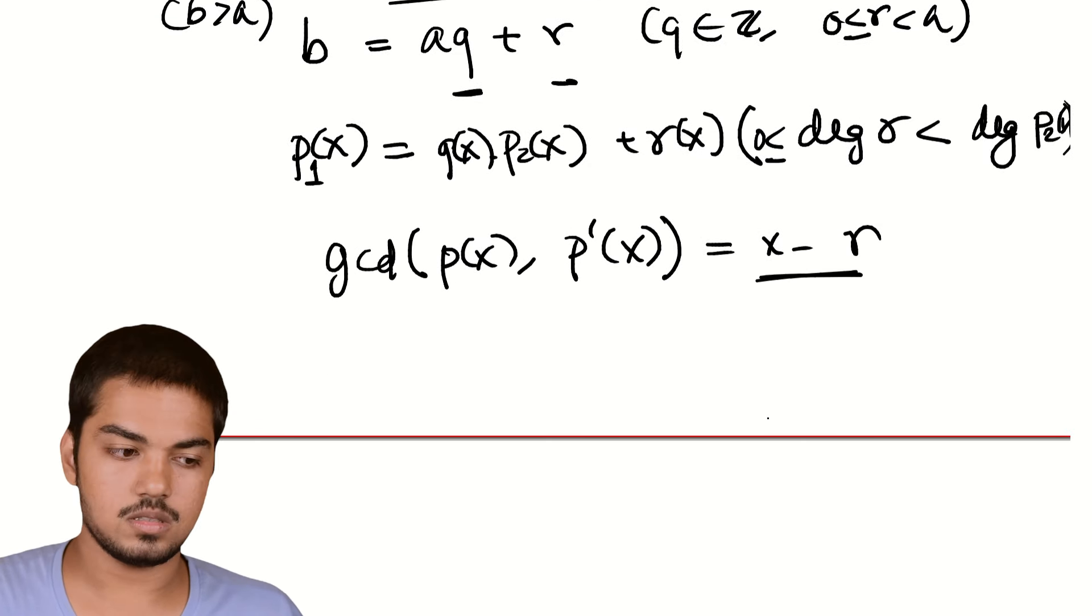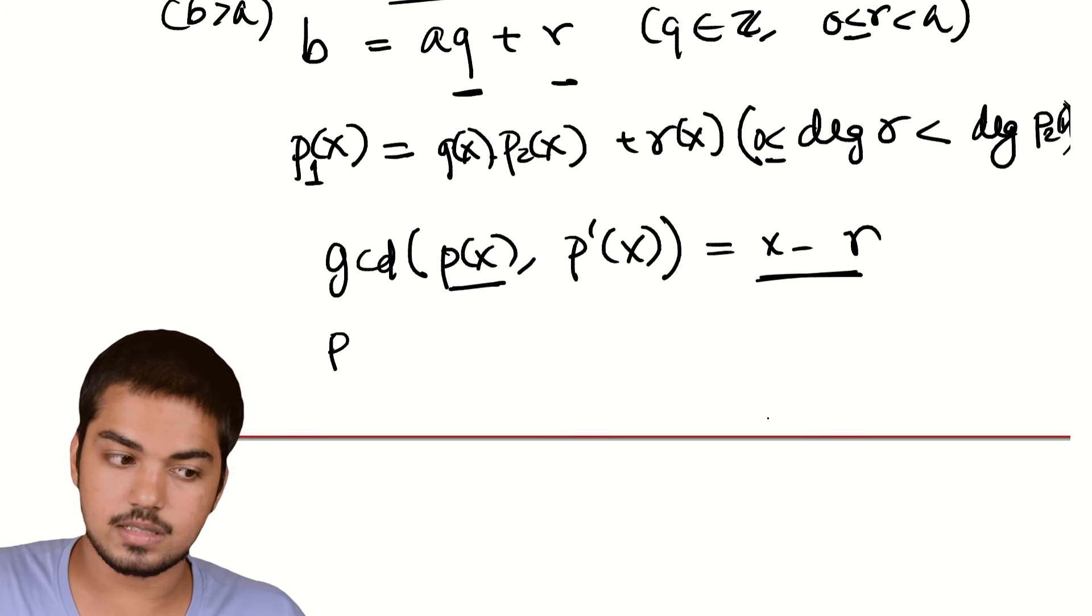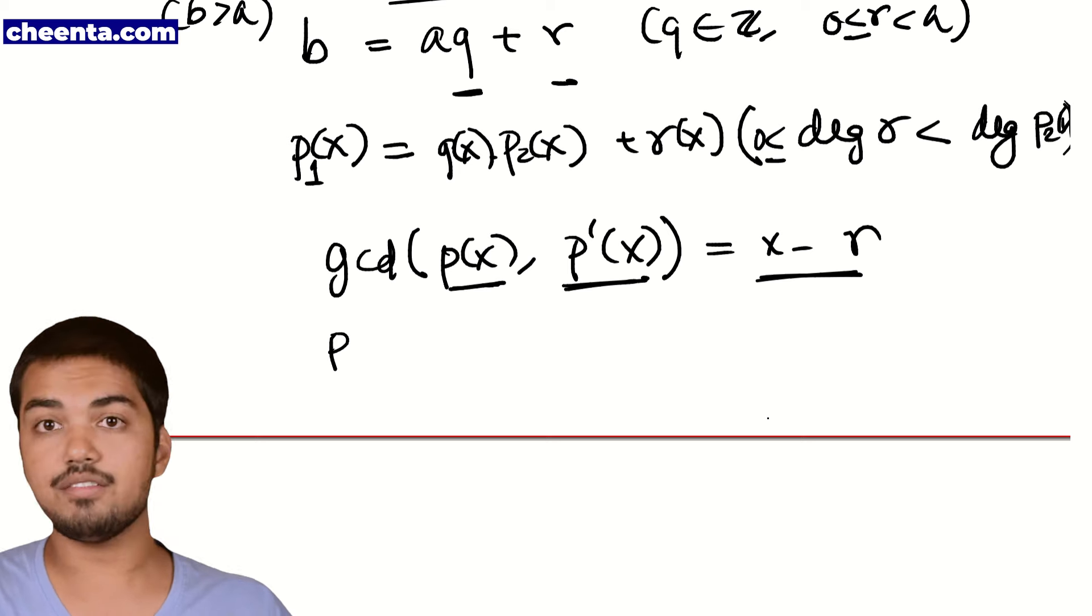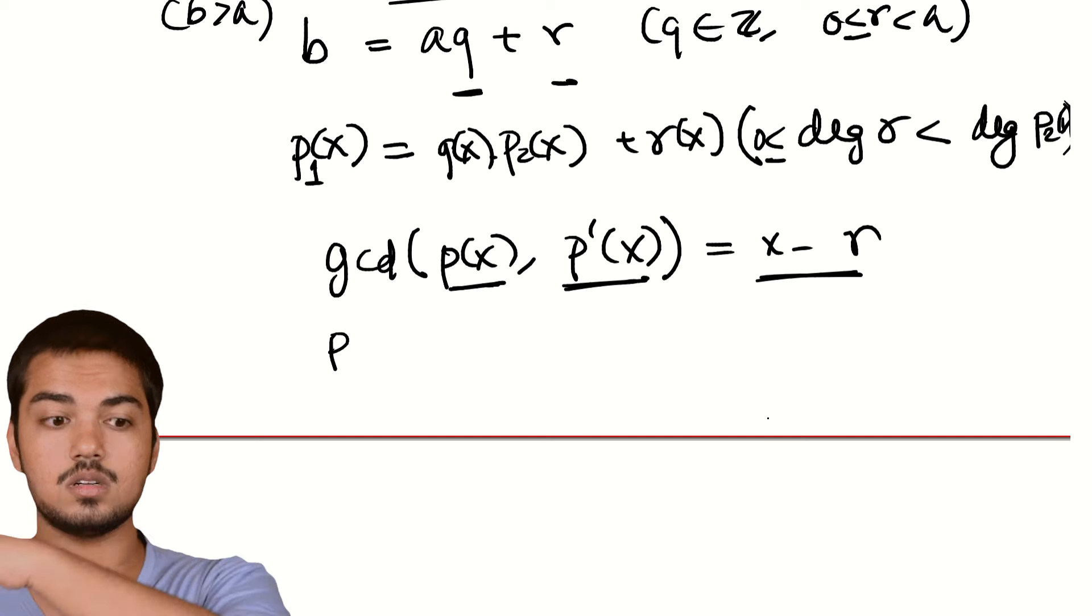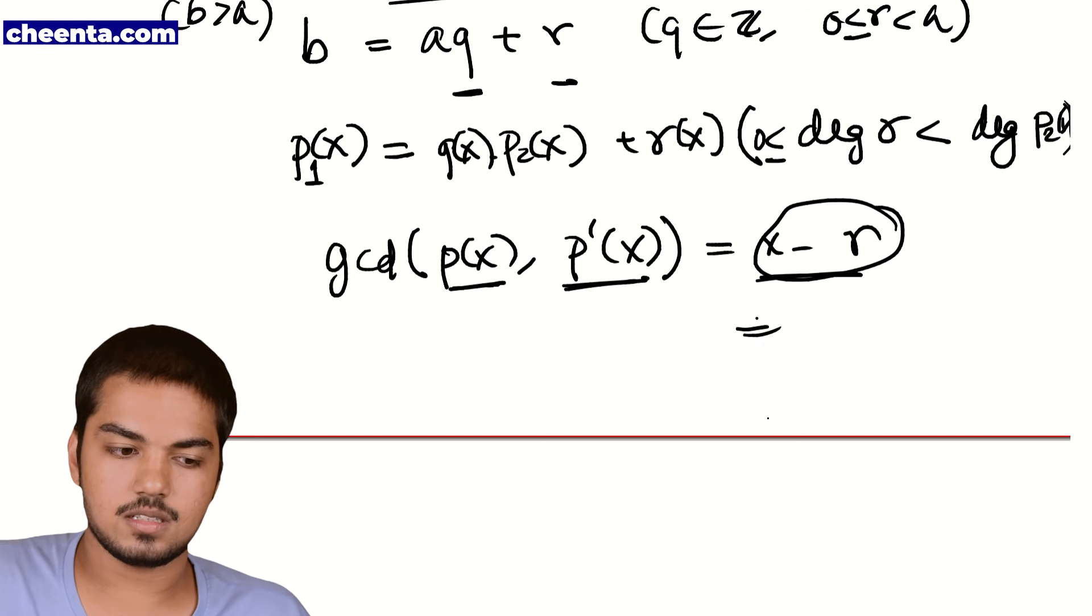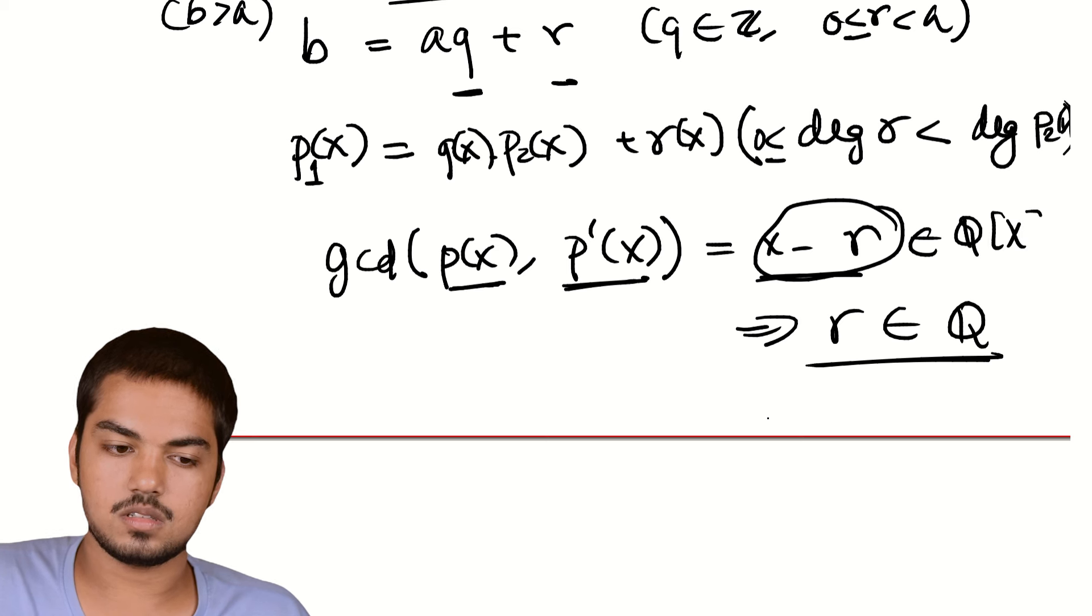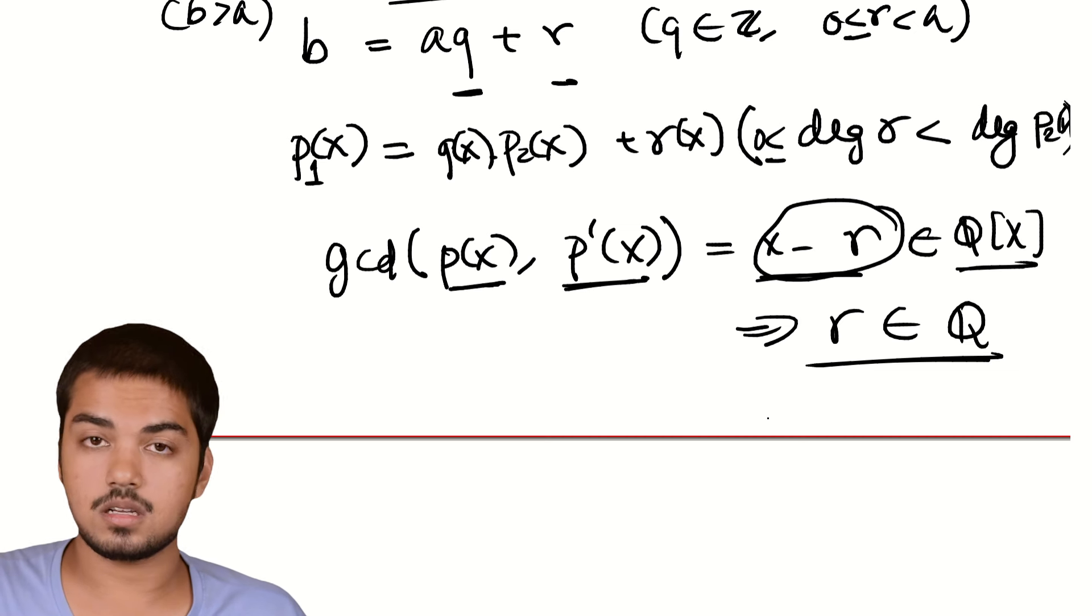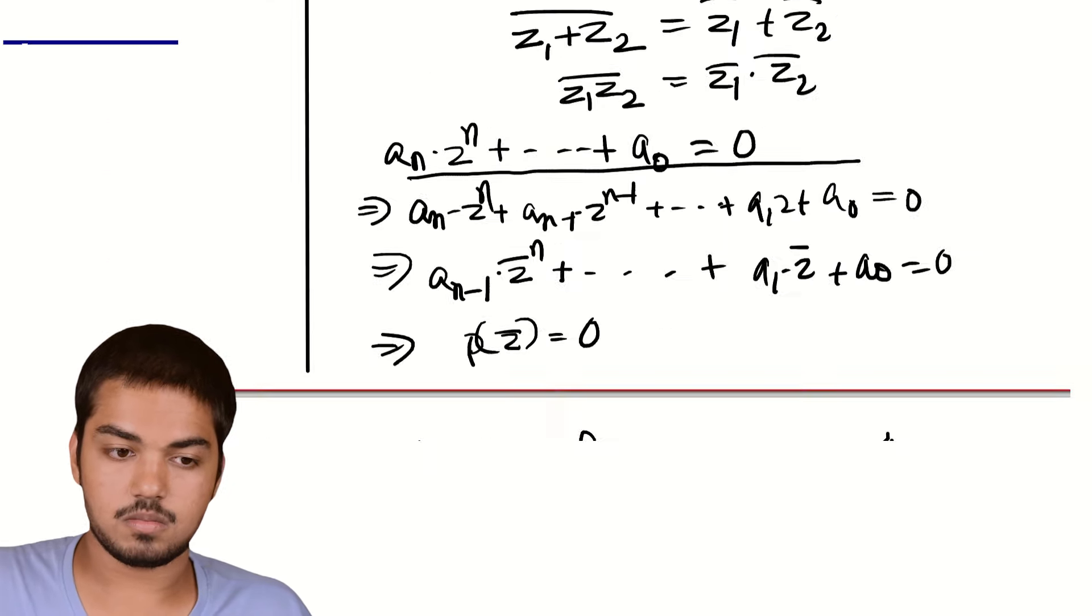But, the way the Euclidean algorithm runs, we know that at each step of the way, in the Euclidean algorithm, we only deal with rational polynomials because P(x) is a rational polynomial, and P'(x) is a rational polynomial. And so, everything else that will show up is going to be a rational polynomial. And hence, by the way the Euclidean algorithm runs, (x - r) is also going to be a rational polynomial. But, that just means that r is rational. This is a rational polynomial, which is how we write rational polynomials. Q[x]. And so, (x - r) is a rational polynomial, which implies that r has to be rational. Great. And so, that proves part A.